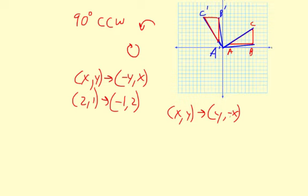And then for 180 degree rotation, x, y goes to negative x, comma, negative y. So, you just change the sign of both coordinates. So, that's the big picture for this lesson. Thank you.